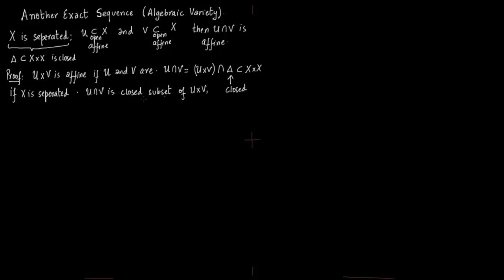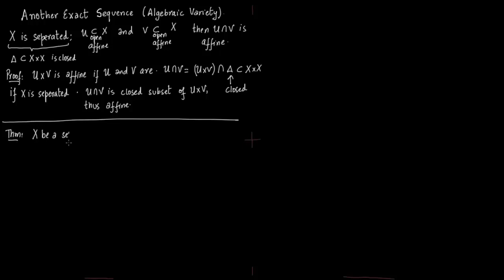Thus U intersection V is affine. This is important because being affine allows us to use Corollary 2.6 on page 120 of Perrin, and we will make this into an affine algebraic variety.